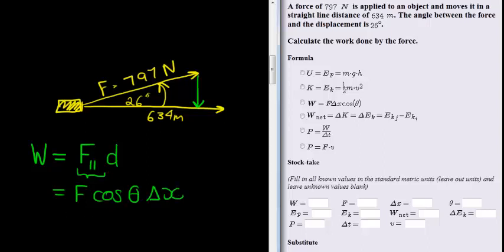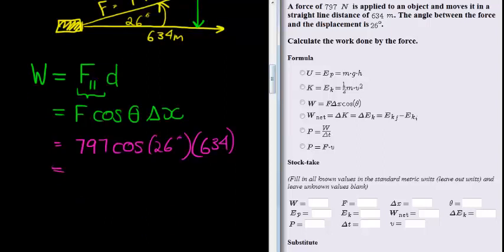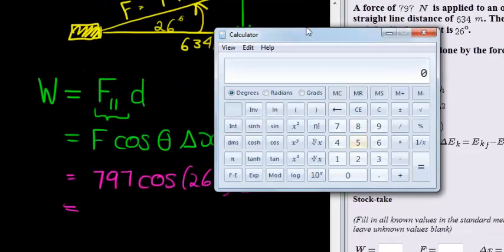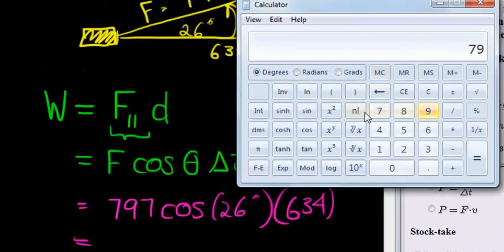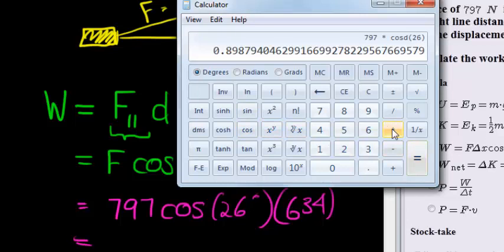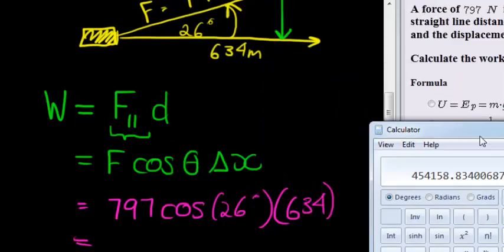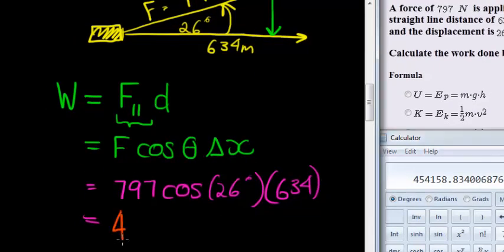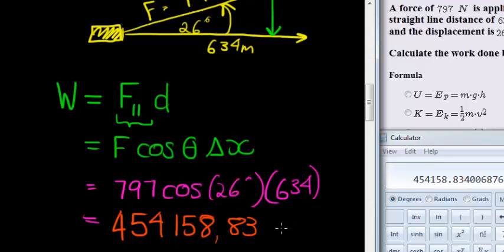That's another way of using displacement, and if I now substitute, what do I get? I get 797 cos of 26 degrees times displacement of 634 meters. And my final answer is 797 times 26 cos times 634, which equals 454158.83 joules.